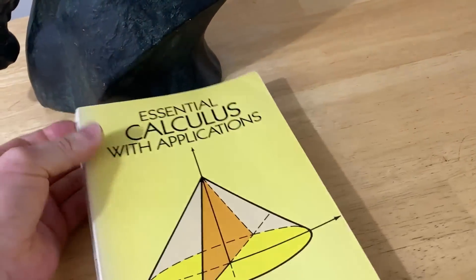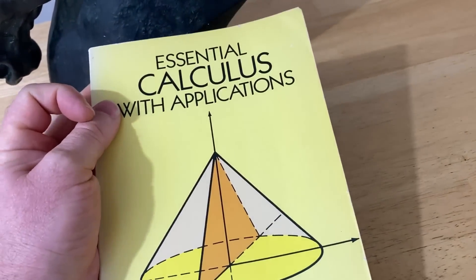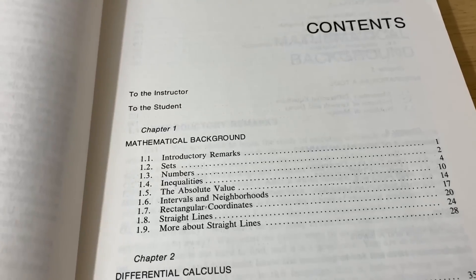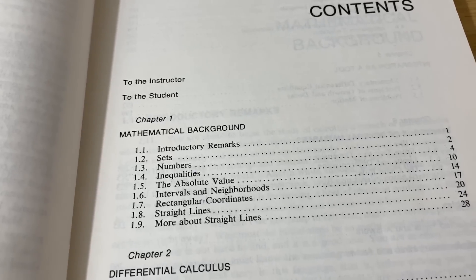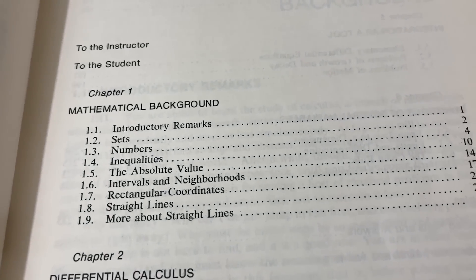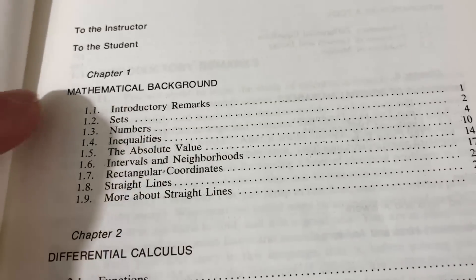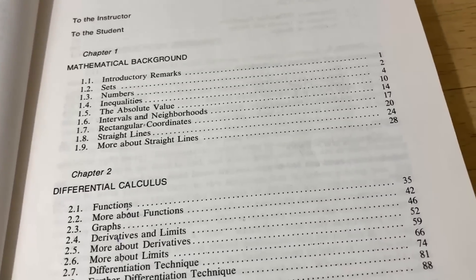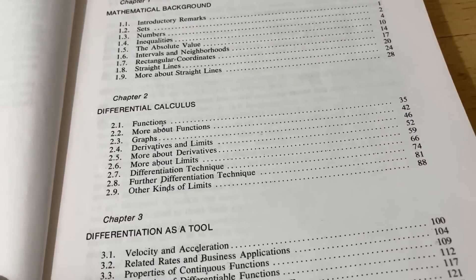And it's an awesome book. This is one of the first Dover books that I ever bought. I have had this book for years. The contents of this book are very different from the contents of modern books. Look at this. Chapter 1 is actually mathematical background. It talks about sets, numbers, inequalities, absolute value. It takes a very different approach, and it has a very different feel than modern books.